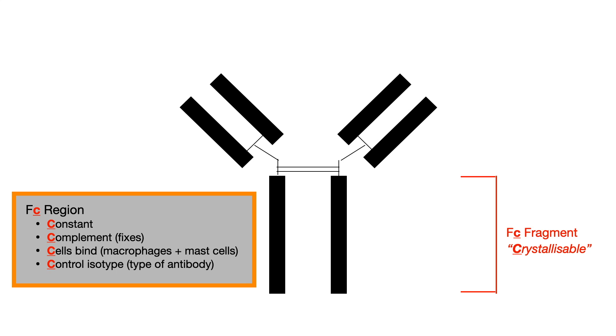And isotype is a fancy way of saying, what type of antibody are we talking about? For example, IgM, IgG, IgA, etc. That's called the isotype. And this region is mostly responsible for controlling the isotype.